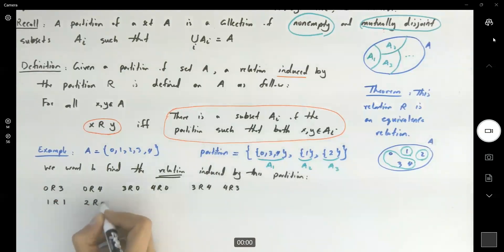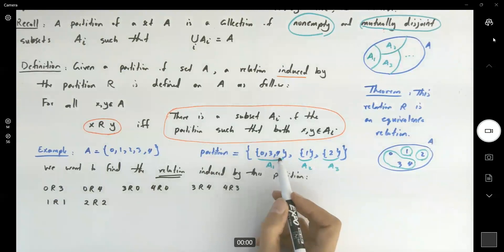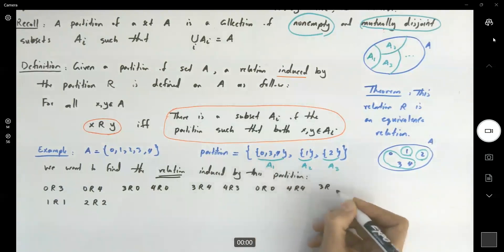1 is related to 1. 2 is not related to 1. 2 is related to 2. Well, what else do we have? Can I say that 4 is related to itself? Of course. They are both in the same partition. 2 is not related to 1, 3 is not related to 2. So now let us form our relation.